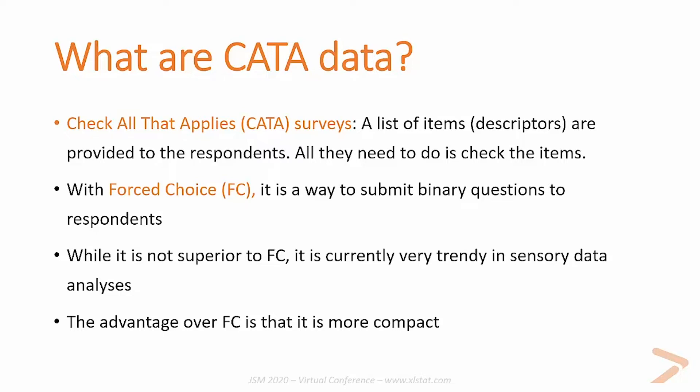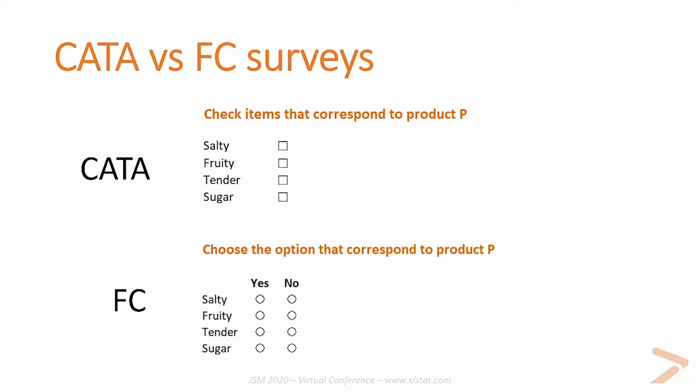The advantage over force choice is that it is more compact. Here are two layouts: one corresponding to CATA and one to force choice. As you can see with CATA, all the respondent needs to do is check a box if he feels that characteristic matches the product. While for forced choice, the respondent must decide whether yes or no the characteristic matches the product, and he will not be able to go a step further if he hasn't made a choice.